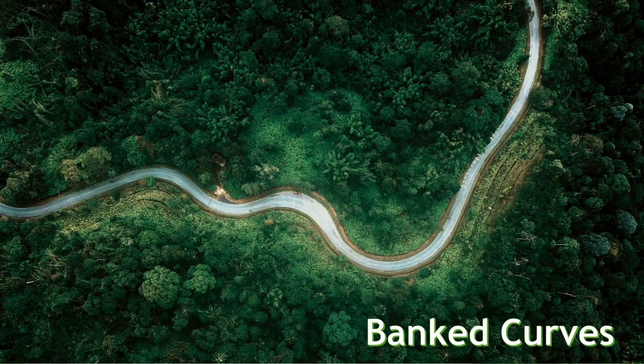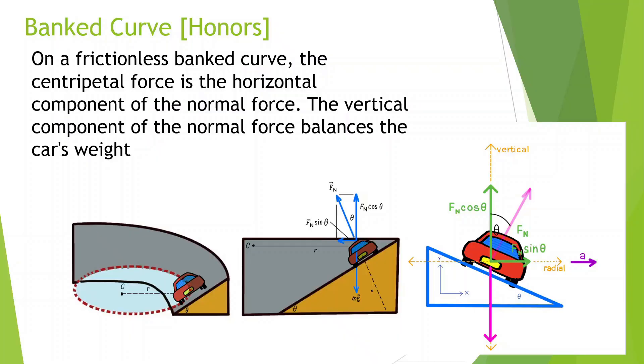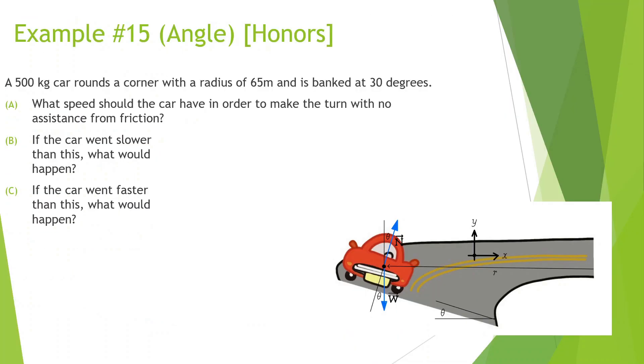Welcome back everybody with Uniform Circular Motion. We're doing banked curves this time. Let's look at these example problems. A 500kg car rounds a corner with a radius of 65 meters and is banked at 30 degrees. Let's do some things. 30 degrees, radius 65 meters.